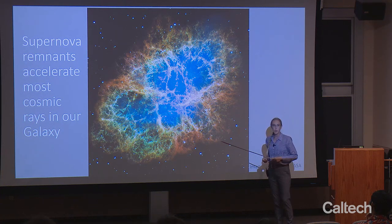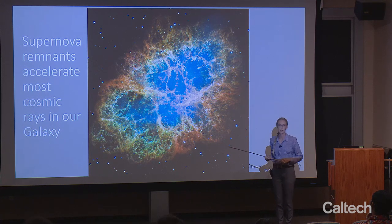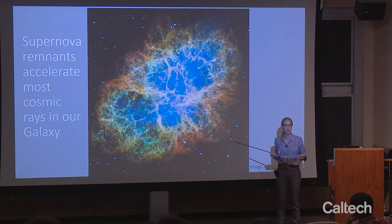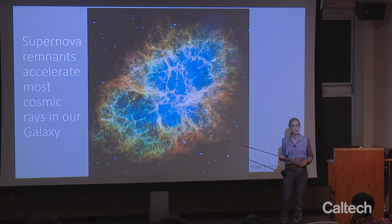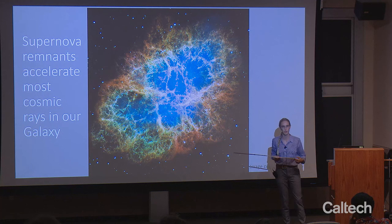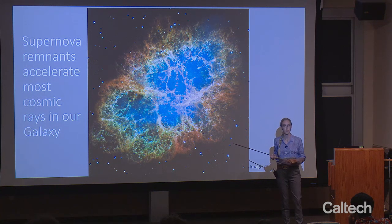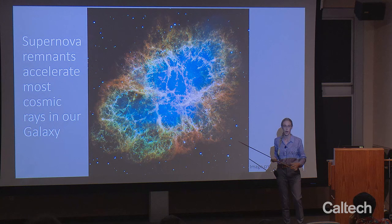Supernova remnants are now pretty confidently identified as the source of most galactic cosmic rays, up to about 10 to the 15 electron volt PeV energies. This works because they have the right energy, the right conditions of magnetic fields and shock waves for the acceleration process, and the total number of supernova remnants matches the observed amount of cosmic rays at that lower energy range. If you look at supernova remnants with gamma-ray telescopes, they're very bright in gamma rays, which should accompany cosmic rays. But above a certain energy, it's difficult to model a supernova remnant producing the highest energy cosmic rays.